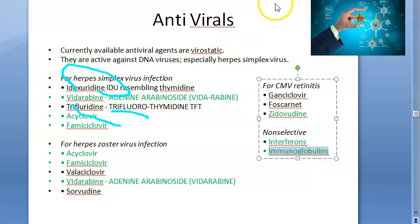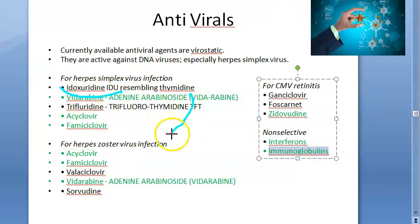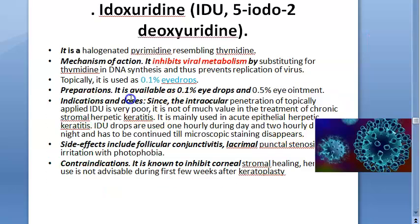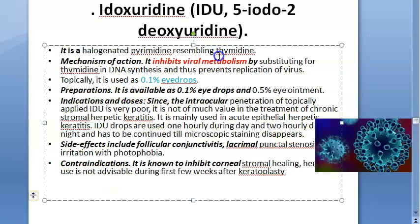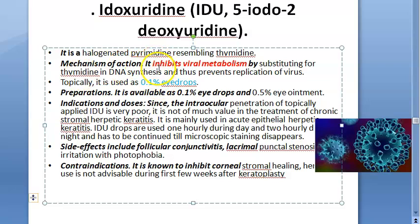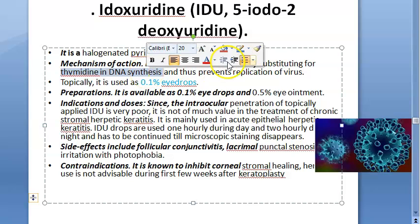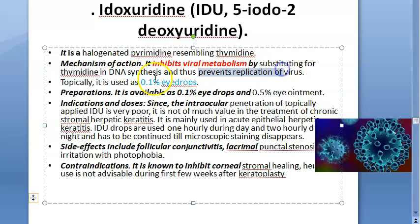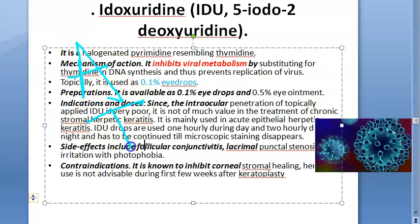Idoxuridine is not favored as much now because better options exist. Basically, these drugs work against DNA by having a very similar structure to thymidine. They inhibit viral metabolism by substituting thymidine in DNA synthesis, which prevents replication of the virus.